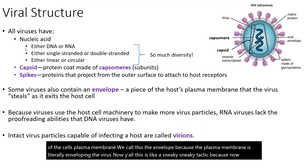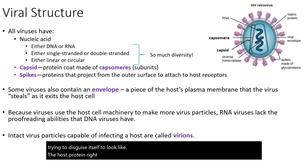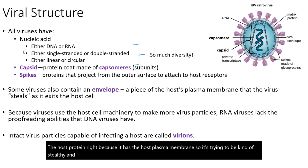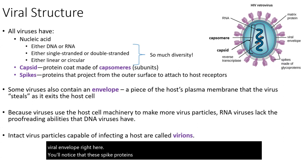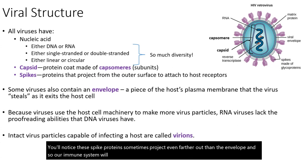We call this the envelope because the plasma membrane is literally enveloping the virus. This is a sneaky tactic because the virus is trying to disguise itself to look like a host protein, slowing down our immune response and tricking it into thinking it belongs there. Fortunately, the spike proteins sometimes project even farther out than the envelope, so our immune system will eventually detect the spike proteins and won't be fooled for long.